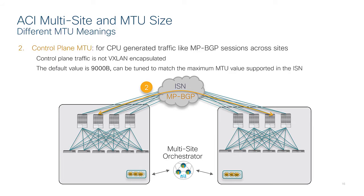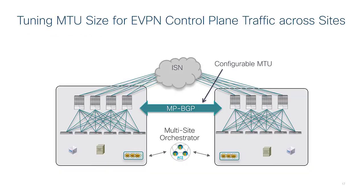The second aspect of MTU is about the control plane traffic generated and sent across sites. We discussed how MP-BGP adjacencies are established between spines connected in different fabrics. The control plane traffic generated by the spine, by default, has a 9000-byte maximum MTU. That means the inter-site network would need to support these 9000-byte MTU. Remember that the control plane traffic is not VXLAN encapsulated. The good news is that this control plane MTU can be tuned at the APIC level — it is a global system setting that allows you to lower the MTU of control plane packets generated by the spine to the value you can support in the inter-site network. 9000 is the default but can be lowered.